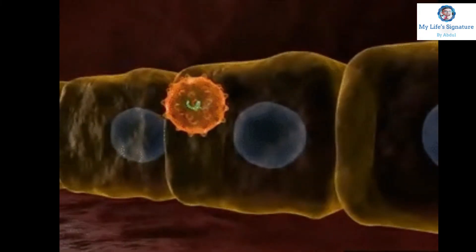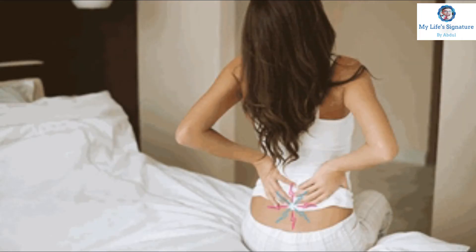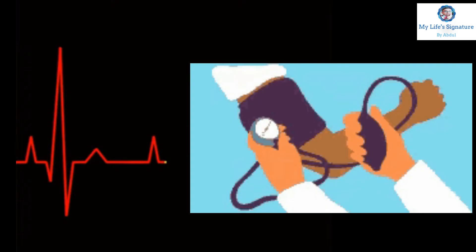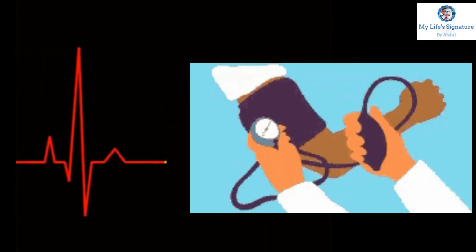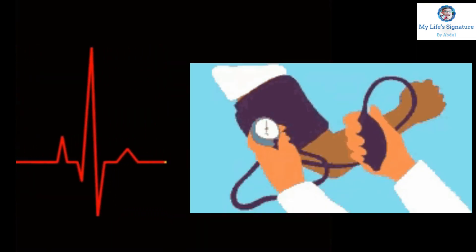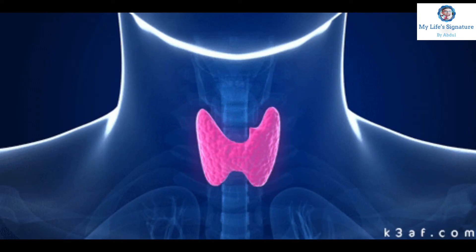Chronic infection of HIV causes mutations in the vitamin D receptor. Vitamin D can indirectly cause changes in blood pressure, immunity, sleep, thyroid, etc.